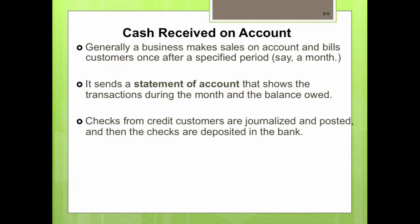A business makes sales on account and bills customers once after a specific period, such as a month. The company sends a statement of account showing all transactions during the month and the balance owed — similar to a credit card statement. Checks from credit customers are journalized and posted, and then deposited in the bank.